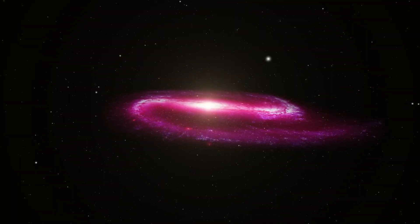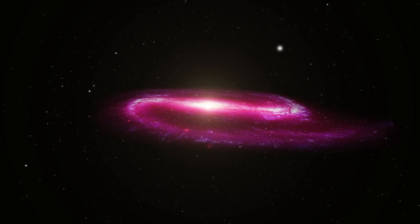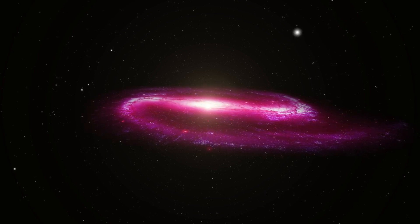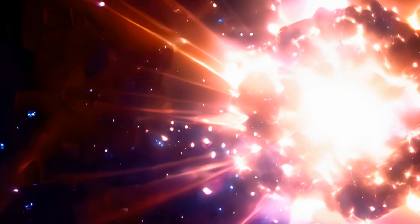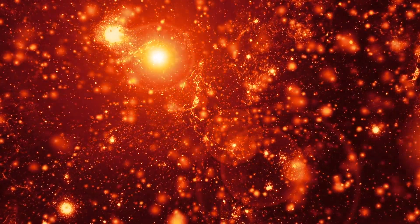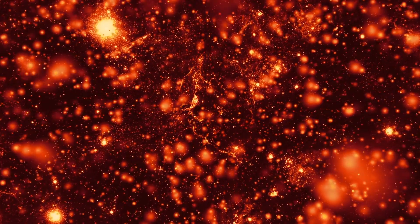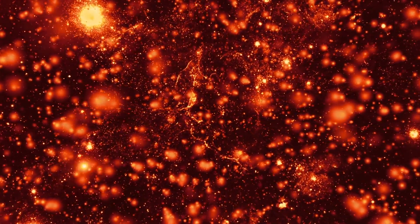The broader significance of studying Betelgeuse extends far beyond the mysteries of this single star. Red supergiants like Betelgeuse are among the most massive and luminous stars in the universe, and they play a crucial role in the cosmic life cycle. Understanding their life cycles helps astronomers unravel the evolution of galaxies. As these stars exhaust their nuclear fuel, they shed their outer layers and eventually explode as supernovae. This explosive end is a process that enriches the surrounding space with heavy elements such as carbon, oxygen, and iron. These elements are fundamental building blocks for planets and, by extension, life as we know it.